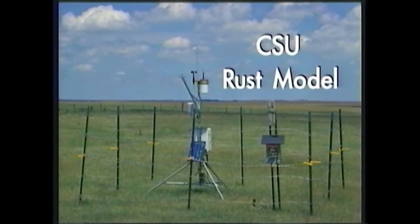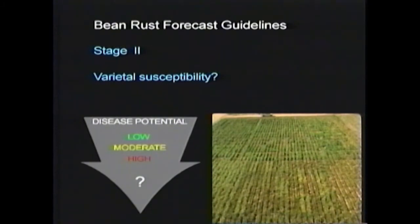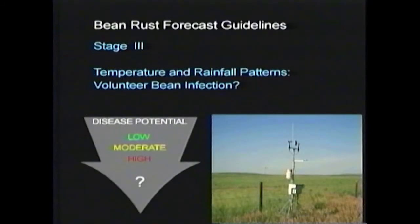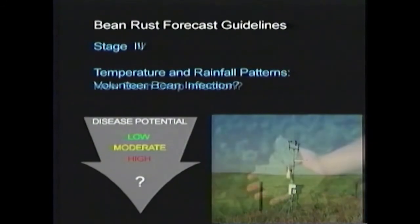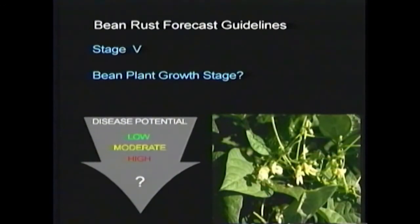The Colorado State University program has developed a five-stage model to monitor rust and the need for fungicides on susceptible varieties of beans. The first stage considers the severity of the previous year's rust epidemic in the region. The second stage considers the susceptibility of bean varieties planted this year. The third stage considers moisture and temperature conditions influencing infection of volunteer beans by overwintered spore stages. The fourth stage considers conditions influencing infection of new crop beans by spores blown from infected volunteer beans. The fifth stage considers the crop development stage when initial infection occurs — infection before or during flowering is more serious than infection after the pod bump stage.